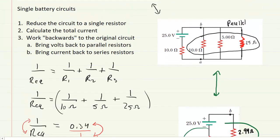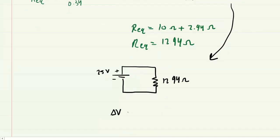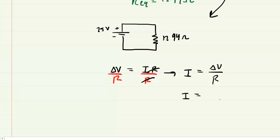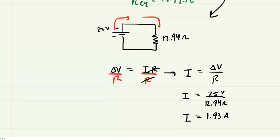In step two, we calculate the total current using Ohm's Law. Delta V equals current times resistance. Dividing both sides by resistance gives us current equals potential difference divided by resistance. The potential difference supplied by the battery is 25 volts and the resistance is 12.94 ohms. Dividing these two quantities gives us 1.93 amps. This is the total current flowing through the circuit, exiting the battery and traveling around the loop.